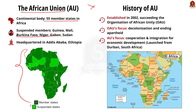The headquarters of the African Union is at Addis Ababa in Ethiopia. The African Union was officially launched in 2002, succeeding the Organization of African Unity. The Organization of African Unity originally focused on decolonization and ending apartheid. In July 2002, the African Union was launched from Durban, South Africa. Upon launch, the African Union shifted its focus towards cooperation and integration among African states. Through cooperation and integration, the African Union aims to achieve economic development among its member states.